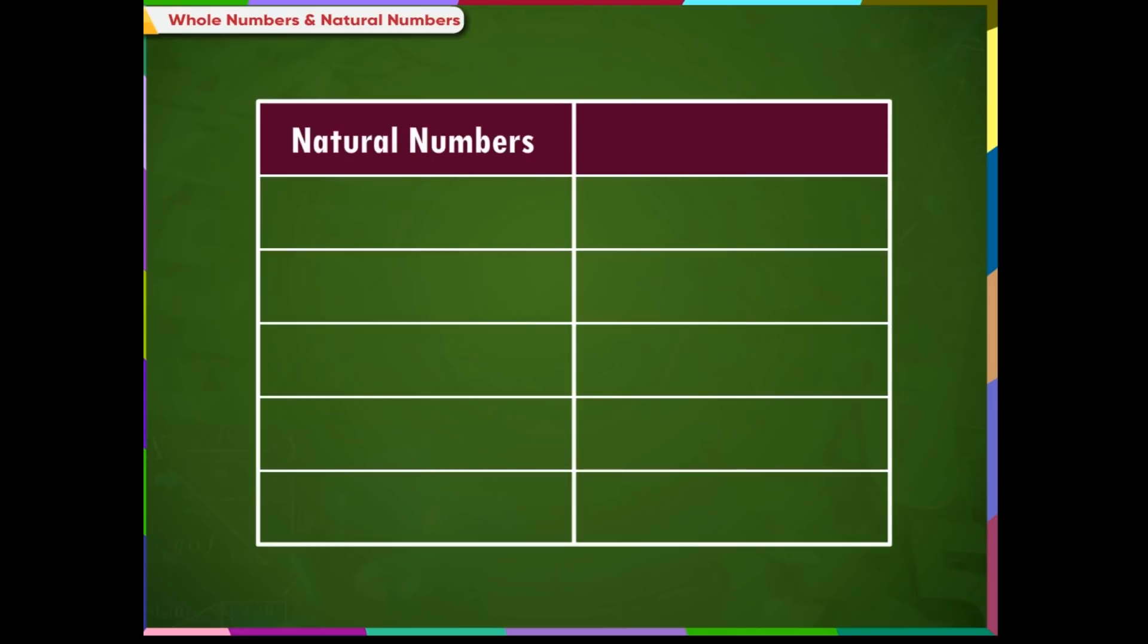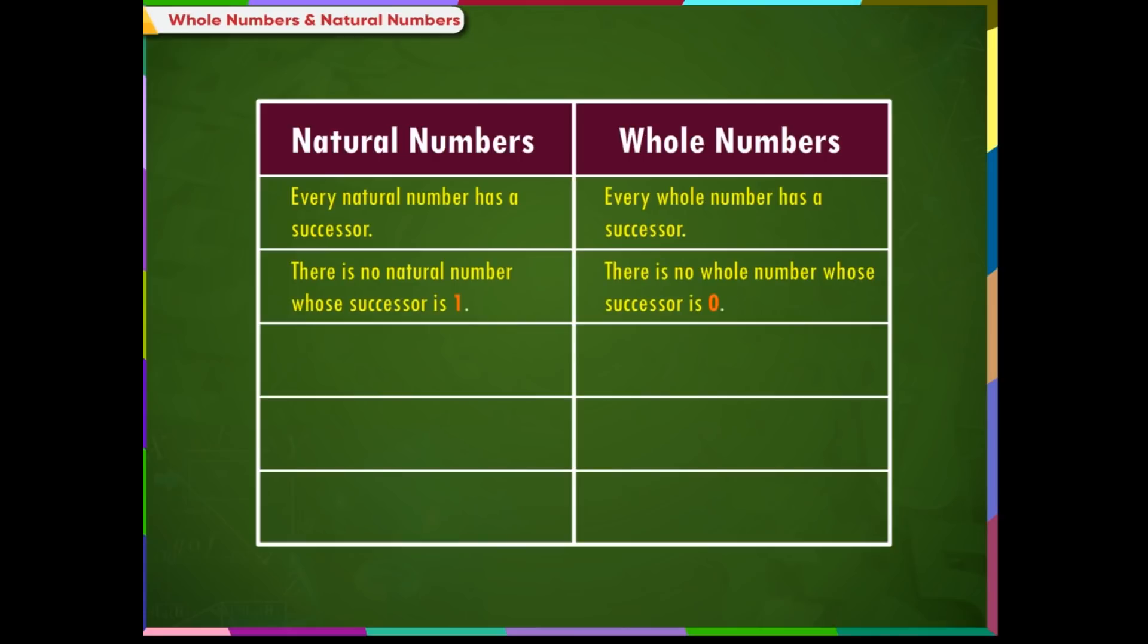Let us revise natural numbers and whole numbers by comparing them in a tabular form. Every natural number and whole number has a successor. There is no natural number whose successor is 1 and there is no whole number whose successor is 0. 1 is the smallest natural number and 0 is the smallest whole number. There is no largest natural number and similarly there is no largest whole number.